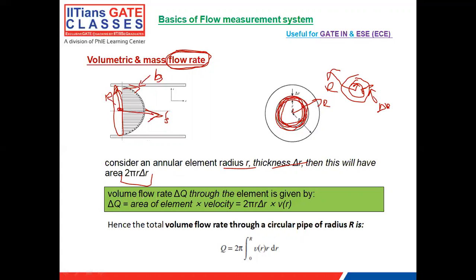The area of this annular element is 2πr·Δr. The volumetric flow rate is given by Q = A × v. So the elemental volume flow rate through this annular element is dQ = 2πr·Δr × v(r), where v(r) is the velocity as a function of radius.